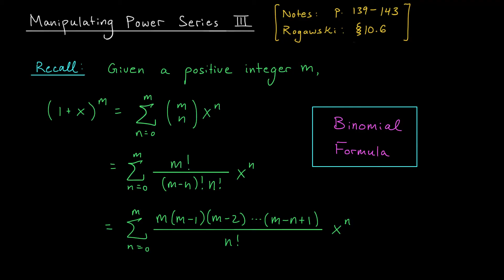What if m is a half? Then we'd be asking for the Maclaurin series of the square root of 1 plus x. It turns out that even when m is not a positive integer, the Maclaurin series for this function very closely resembles our binomial formula. It's not going to stop at some finite number m because that would give us a polynomial, and the function on the left would not be a polynomial — rather, the sum contains infinitely many terms. That change aside, the terms look identical to what you see here. That Maclaurin series is known as the binomial series.